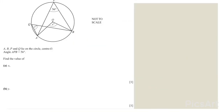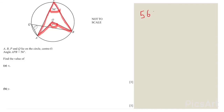In this shape, angle APB is 56 degrees. A, B, P and Q lie on the circle with center O. We have to find the value of x and the value of y. Looking at the first shape, x is the center angle and 56 degrees is the angle at the circumference. The angle at the center is double the angle at the circumference, so 56 multiplied by 2 gives 112. Therefore x equals 112 degrees.